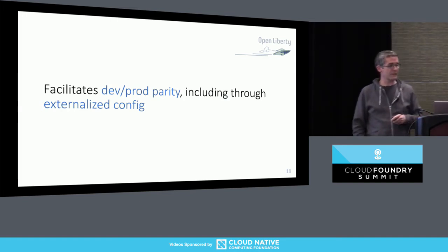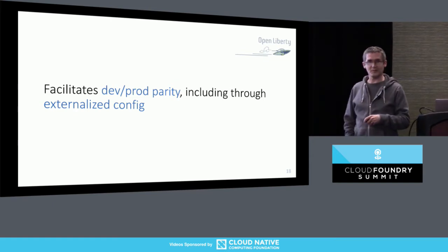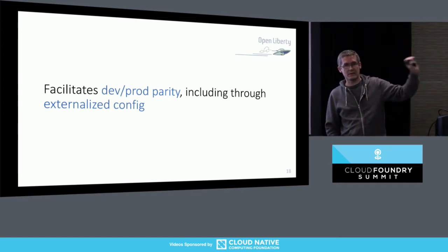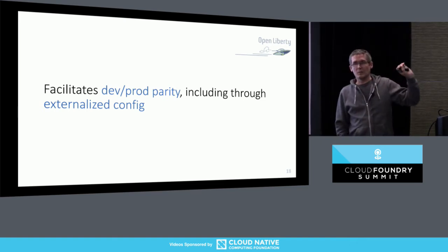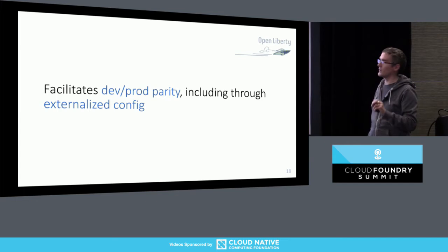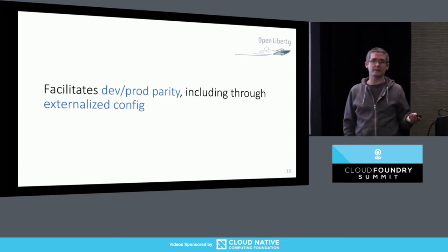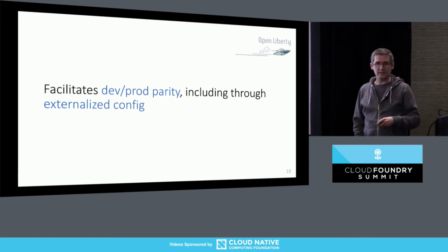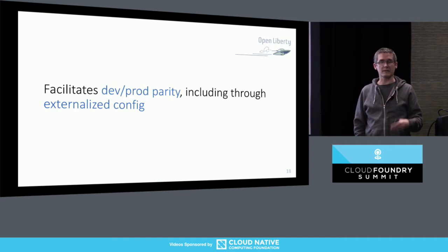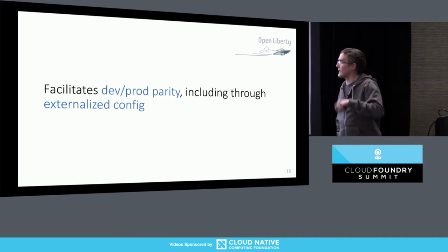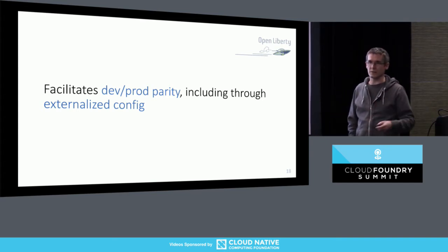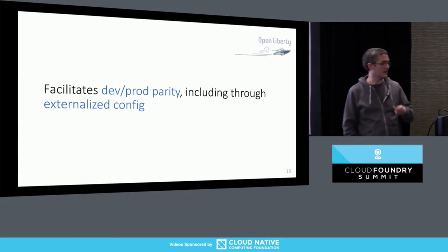Next: facilitate dev-prod parity, including through externalized config. Thinking about the DevOps pipeline doing continuous integration and continuous delivery, you want to build the artifact that's going into production as soon as possible and not change it as you go through the pipeline - because if you're rebuilding at the last stage and putting it into production, you're effectively invalidating the testing that went before. One mechanism is externalizing configuration: things that vary as you go through the pipeline can go into external configuration injected into the artifact, so you don't have to rebuild it. Things like port, security configuration, location of services - you externalize all those capabilities.